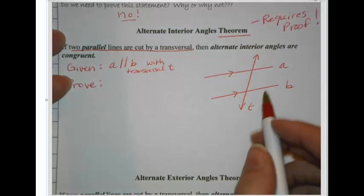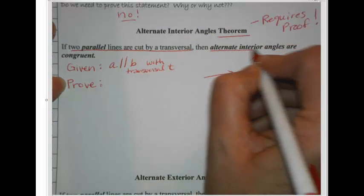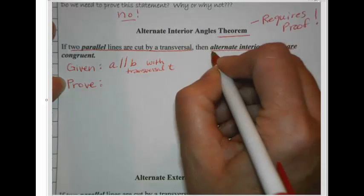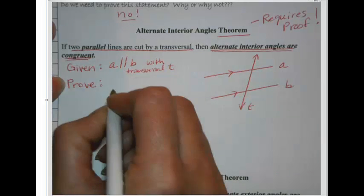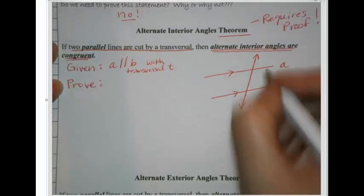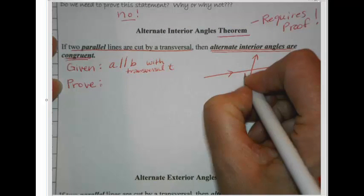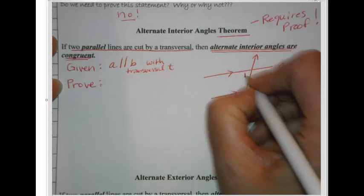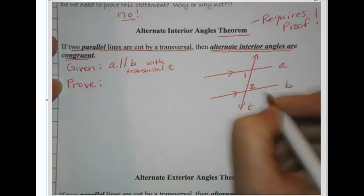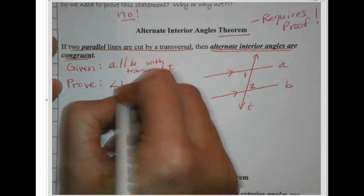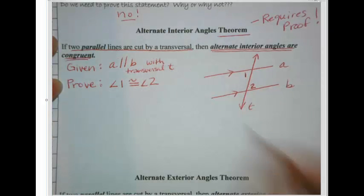We're going to prove that our alternate interior angles are congruent — that's our conclusion. We need to write that as the goal. It will be easier if we number them, so let's pick some alternate interior angles. Let's call this angle 1, and down here, alternate interior angle 2. And let's prove that angle 1 is congruent to angle 2. That's our goal.